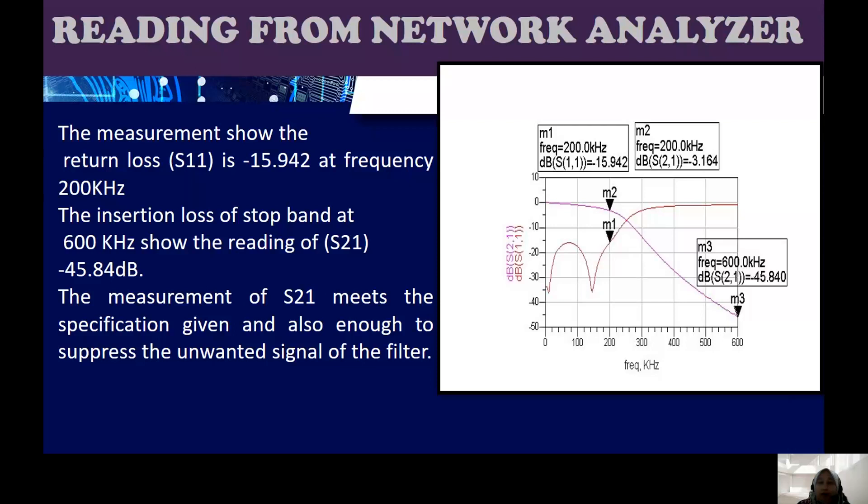This is the output from the network analyzer by using the lump elements. The measurement of the return loss S11 is negative 15.942 dB at the frequency 200 kilohertz and the insertion loss of stop band at 600 kilohertz showing the reading of S21, which is negative 45.84 dB. In this case, the measurement of S21 meets the specification given and is enough to suppress the unwanted signal of the filter.